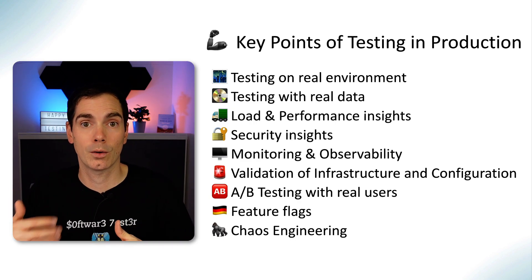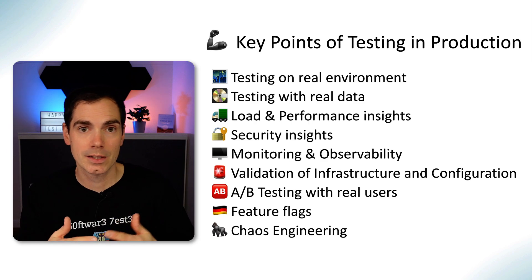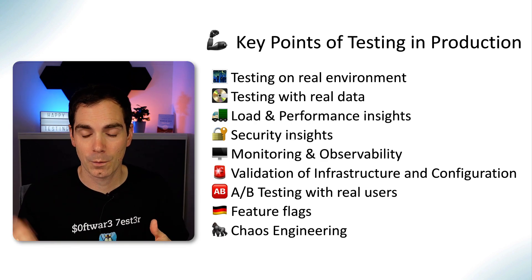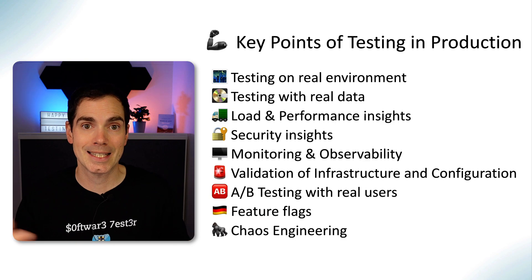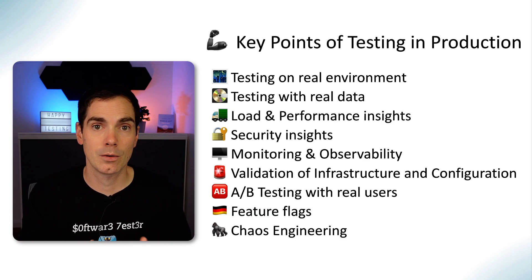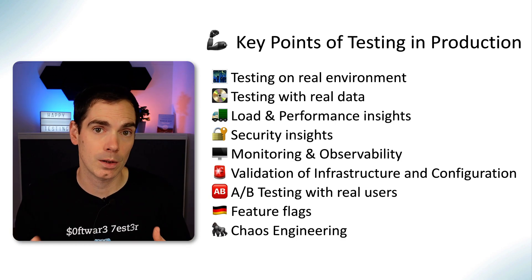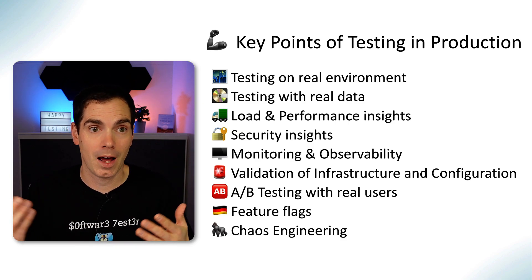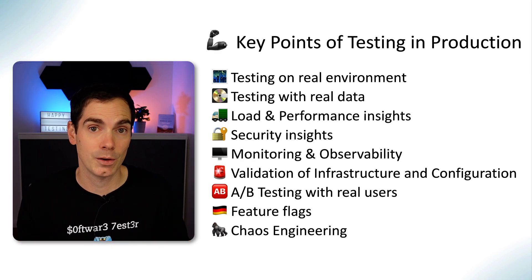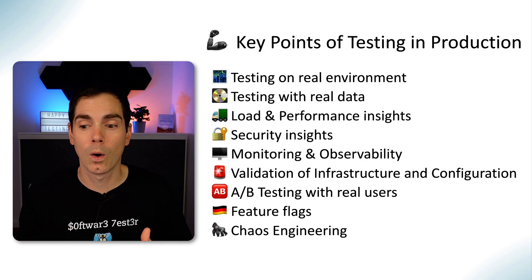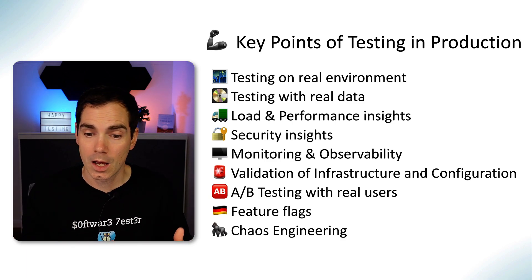You can get load and performance insights because production is where you should do load and performance testing. However, there are also security risks — you may leak sensitive data, but you also gain security insights through things like cross-site scripting tests or other final checks on the live system. Monitoring and observability are also important for every development team — without it, it's like flying an airplane without looking out the window. It should be the default standard, so you know what the database and APIs are doing in production.